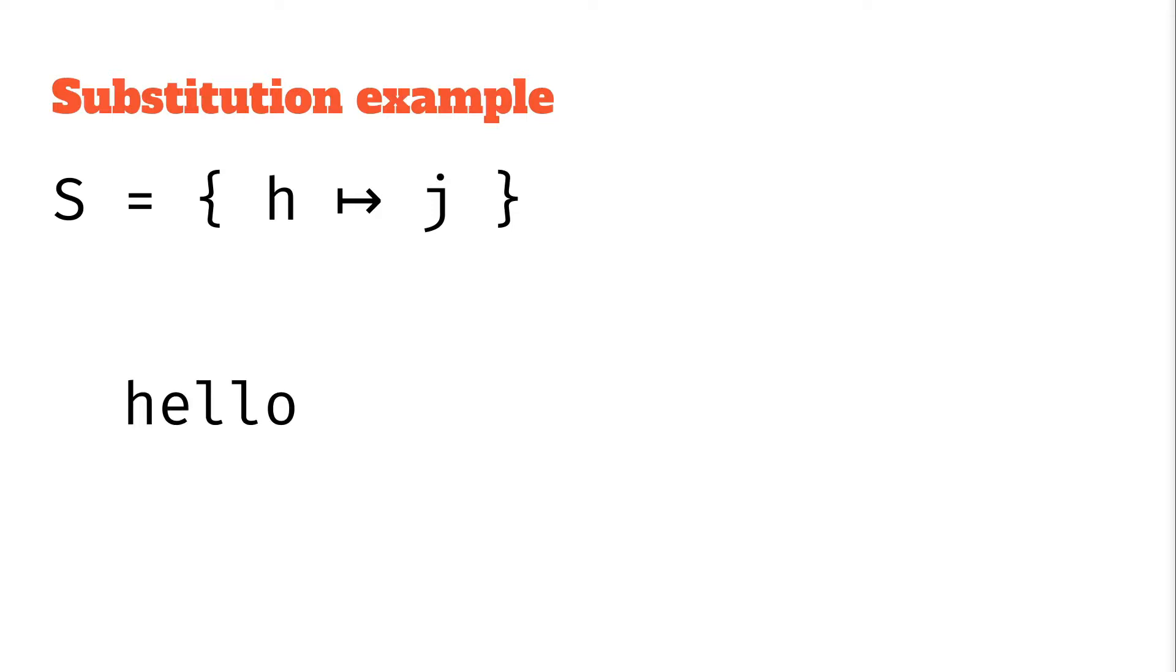So for example, if we have some string, let's say hello, and we apply this substitution on the string, then we get jello because we've applied that H to J mapping on hello, we get jello and that H turns into a J.